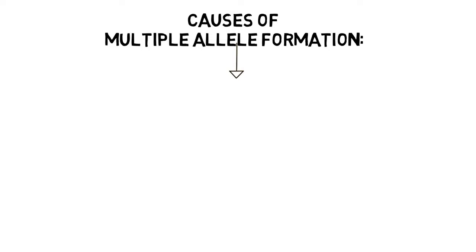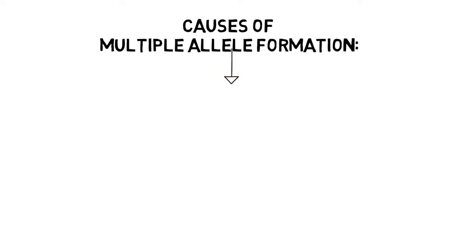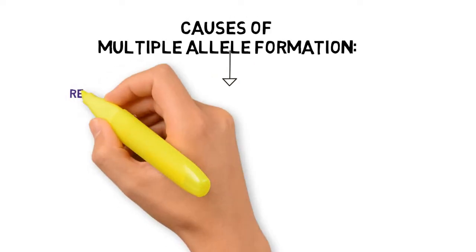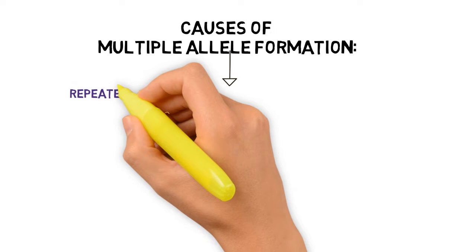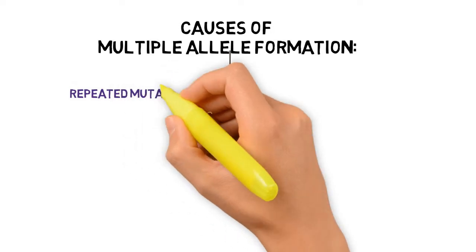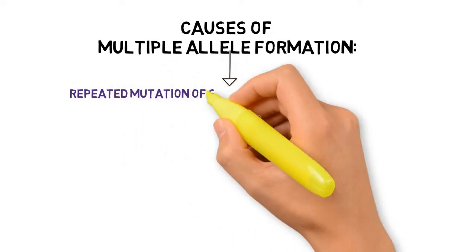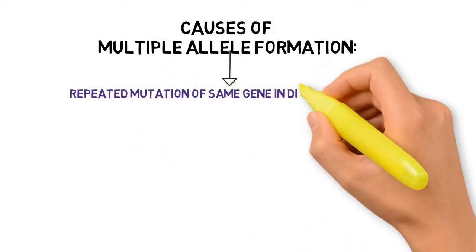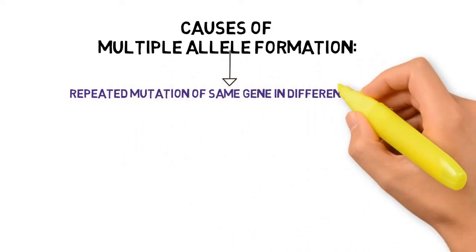Repeated mutation of a gene may cause multiple allelism formation.